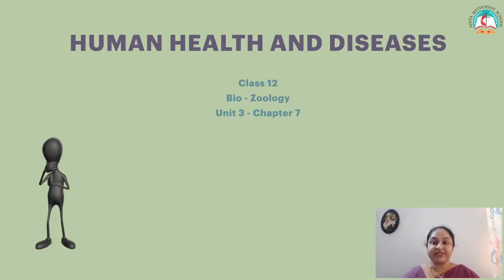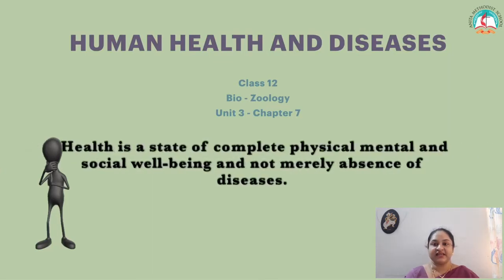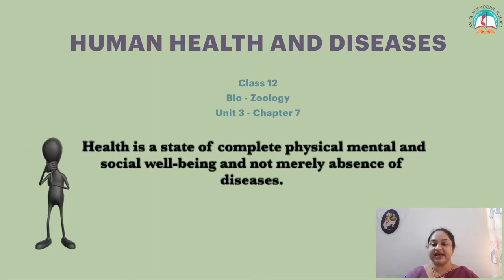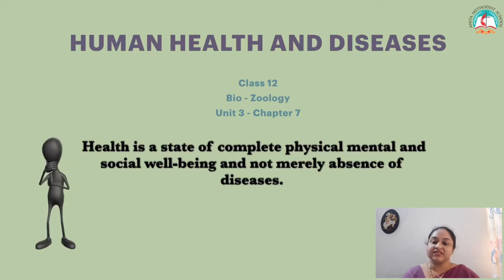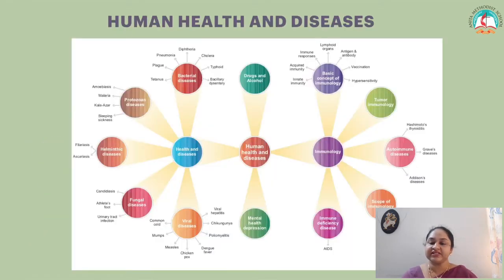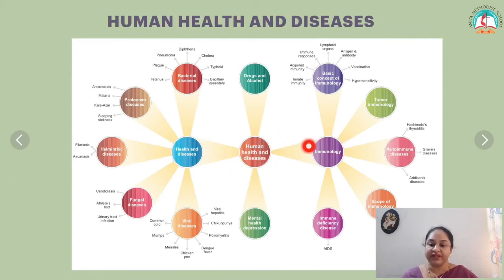The seventh chapter is human health and diseases. Health is a state of complete physical, mental, and social well-being — it is not merely the absence of disease. In this chapter, we cover different topics, including immunology. Under immunology, we cover the basic concepts of immunology.